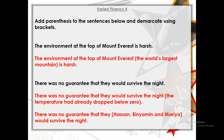Let's run through our answers. For the first one: 'The environment at the top of Mount Everest (the world's largest mountain) is harsh.' That's the extra information — the parenthesis added about Mount Everest. For the second sentence, you might add parenthesis after 'they' to clarify who they are: 'There was no guarantee that they (Hassan, Binyamin, and Maria) would survive the night.' Alternatively, you could add information about the night, since the temperature had already dropped below zero. Please make sure you're writing this all down in your book so I can mark it later.